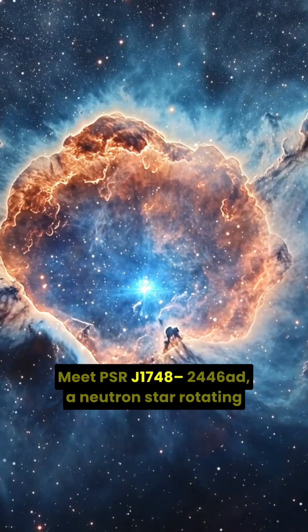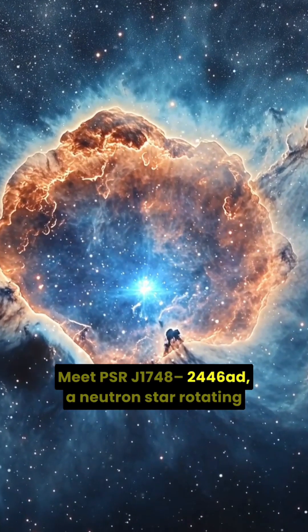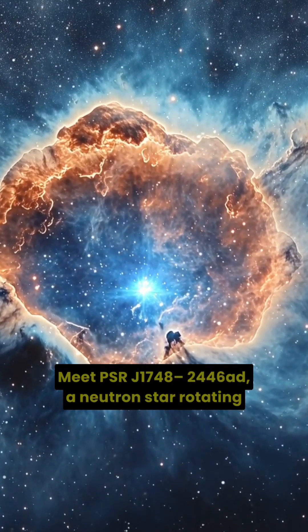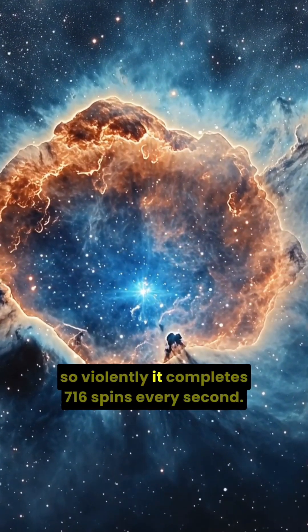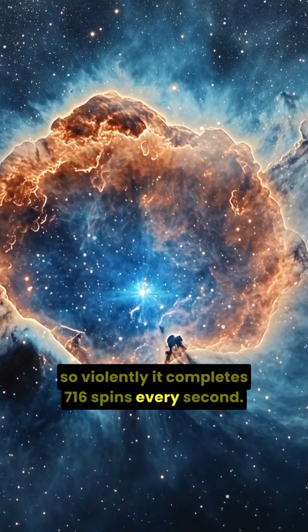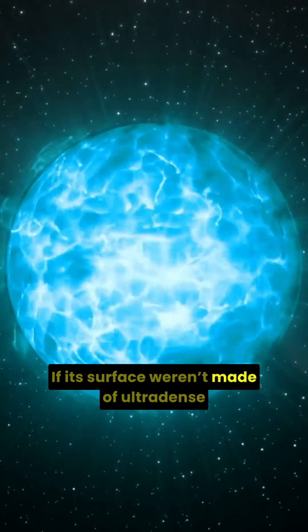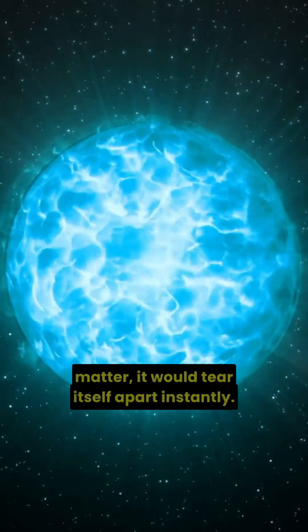Meet PSR J1748-2446AD, a neutron star rotating so violently it completes 716 spins every second. If its surface weren't made of ultra-dense matter, it would tear itself apart instantly.